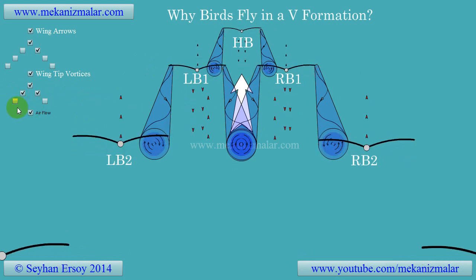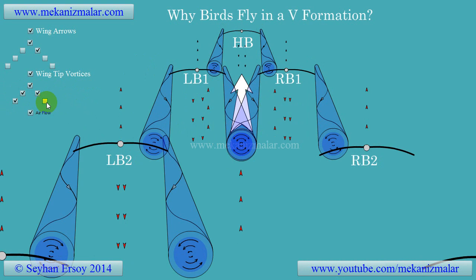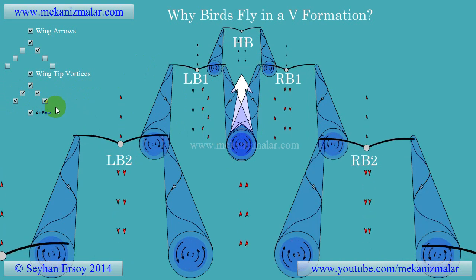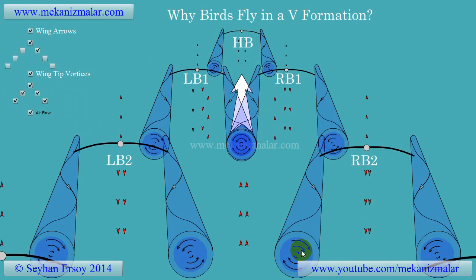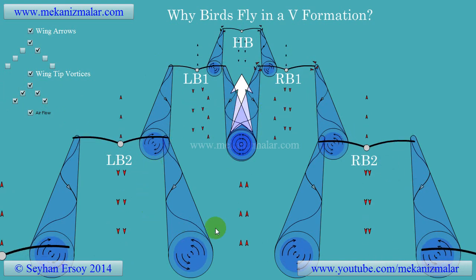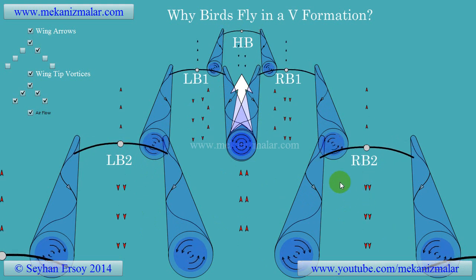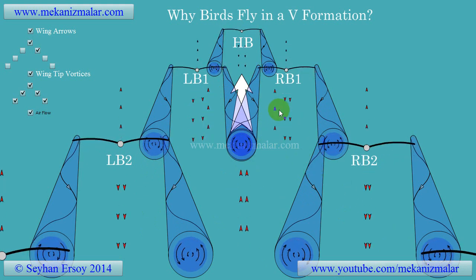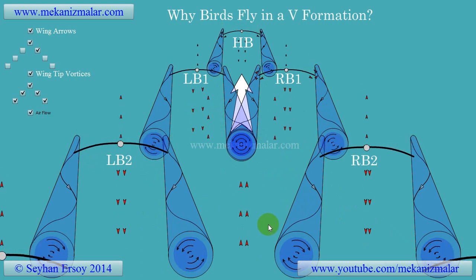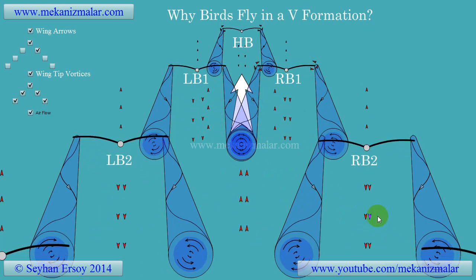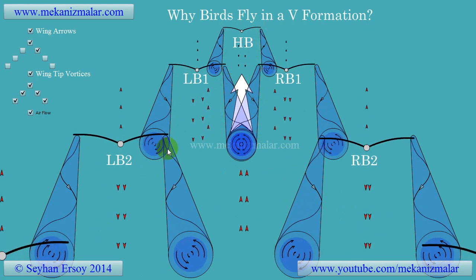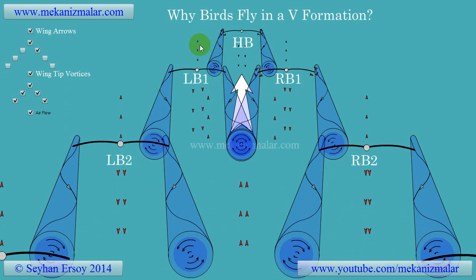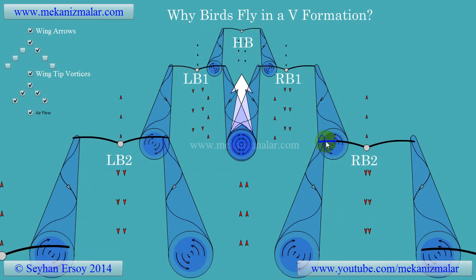Now let's turn on the air motion arrows for all of the birds in this animation. Notice that inside the cone-shaped region of the V formation, air moves mostly downward, and there is also a region with an upward draft tendency. The airflow in that region is not predictable and choppy, and any bird flying in that area would be pushed downward. The best spot to fly is at the boundary of the V-shaped region where there are constant updrafts.